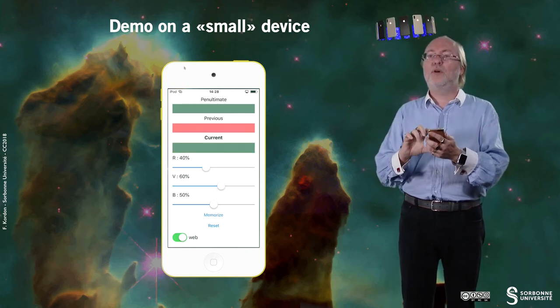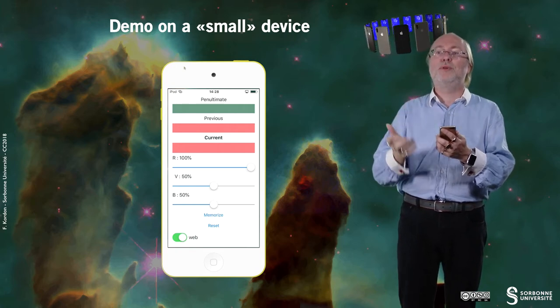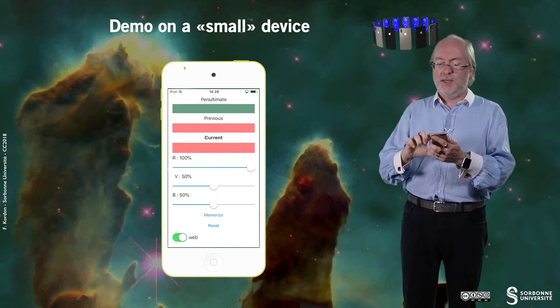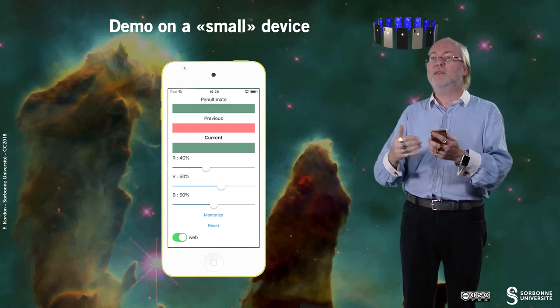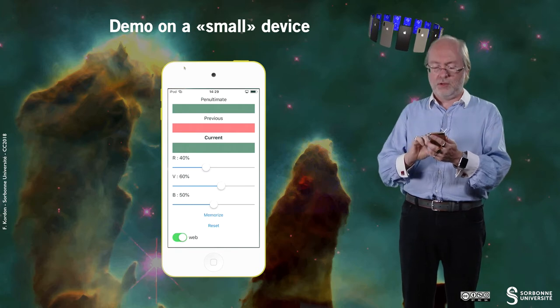If I tap on one of the colors that has been remembered, the previous one or the penultimate one, then the color I have selected appears at the level of the current color.